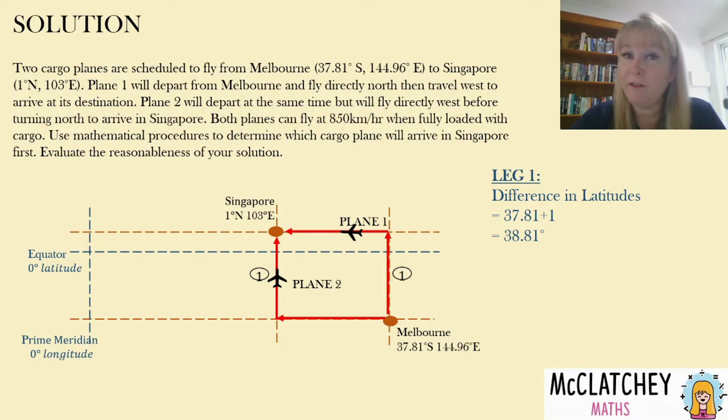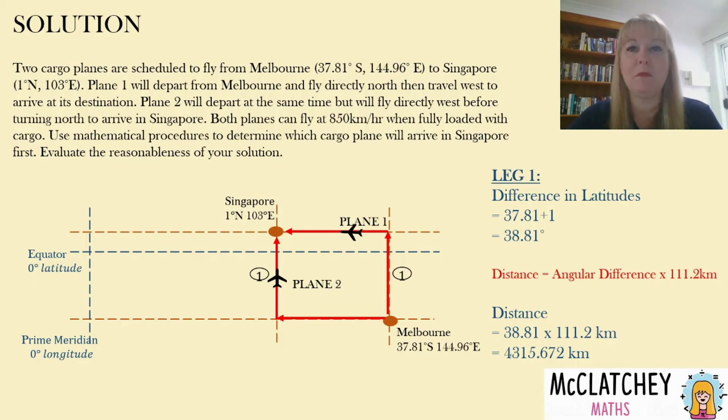Now we need to choose our formula from our formula sheet and this is the one where we have that common longitude. So we're going to work out that angular difference which is 38.81 and we're going to multiply that by 111.2 kilometers and we work out that the distance that they're traveling on that northern bound leg is 4315.672 kilometers. Now you might be wondering why have I rounded that to three decimal places there. Well that will be more important later on, we do our final rounding at the very end, we try not to round in between.